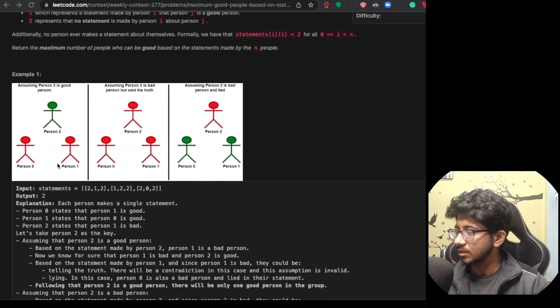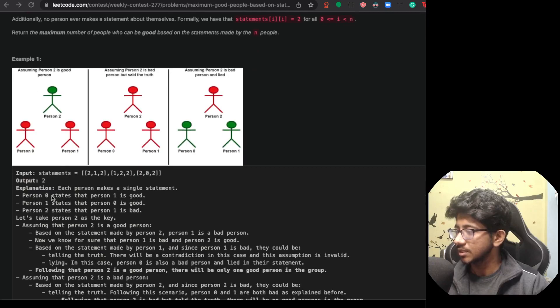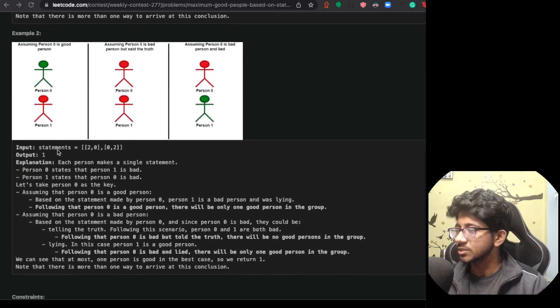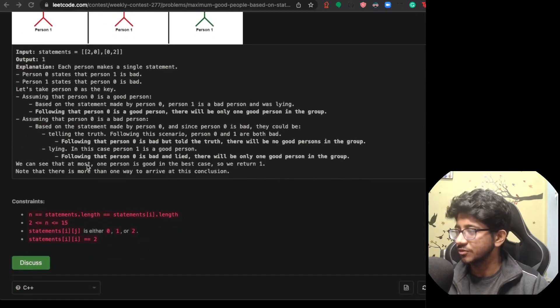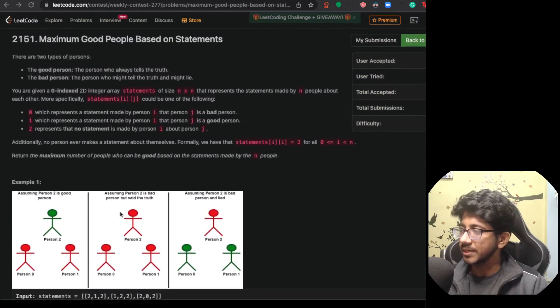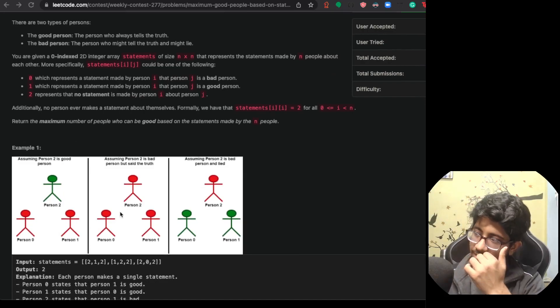Maximum number of people who can be good based on the statement made by N people. So we are given statements of N cross N, like everybody makes a statement about something else or they might not make which is the second case, two case. And we have to find the biggest possible group. Seems interesting. So person zero states that person one is good. One states zero is good. Two states that person one is bad. So zero and one can together be good and two cannot be good because he is saying one is bad, so he has to be bad. So two is obviously the optimal answer.